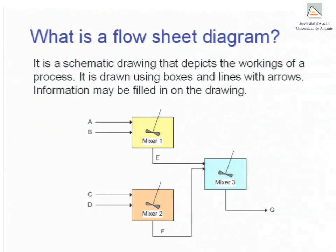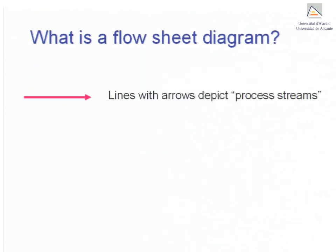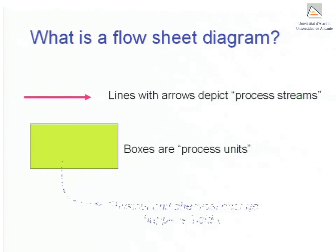For instance, the flow sheet diagram shown here depicts a mixing process in which a number of streams are combined. The lines with arrows represent process streams, i.e., the pipes which transport mass between the various process units, the boxes. The boxes are the process units where streams enter or exit and also where physical and chemical change takes place. These changes can be temperature changes, concentration changes, etc.